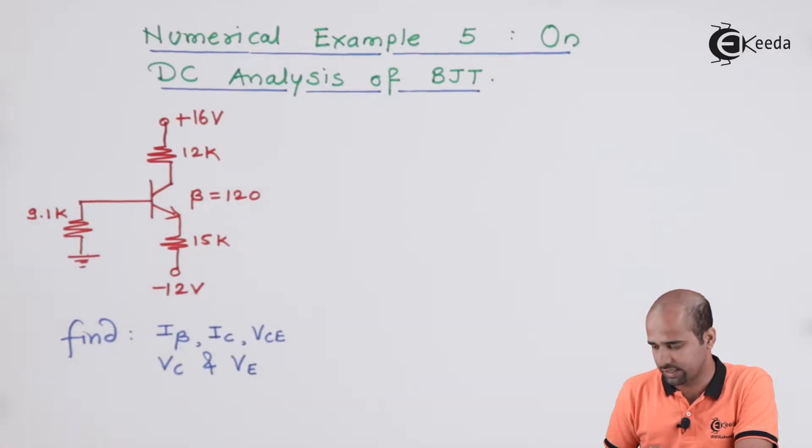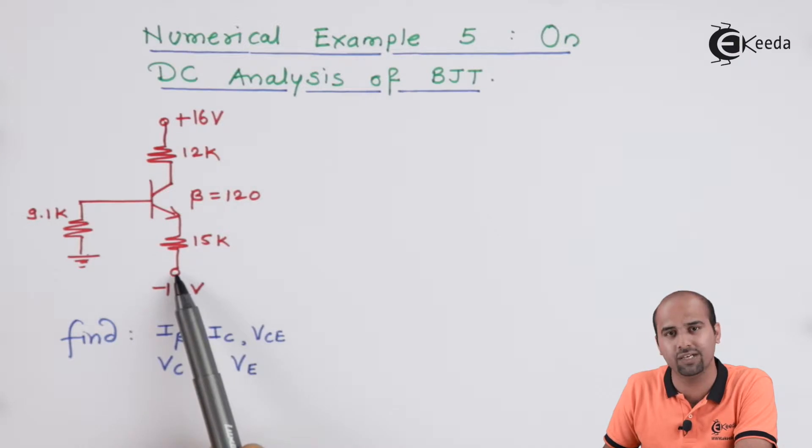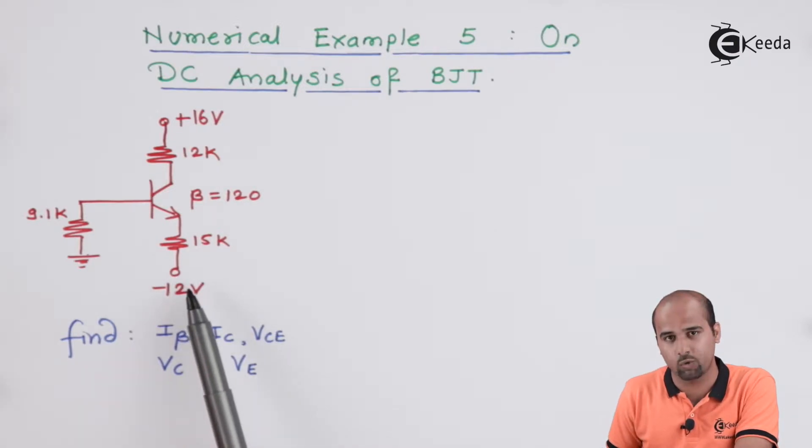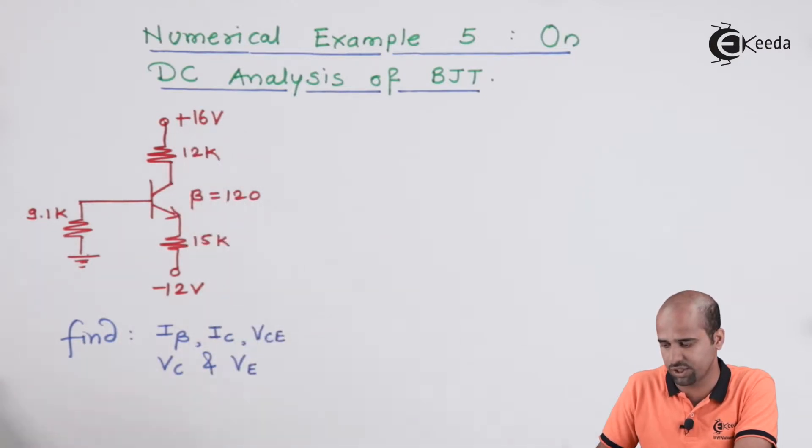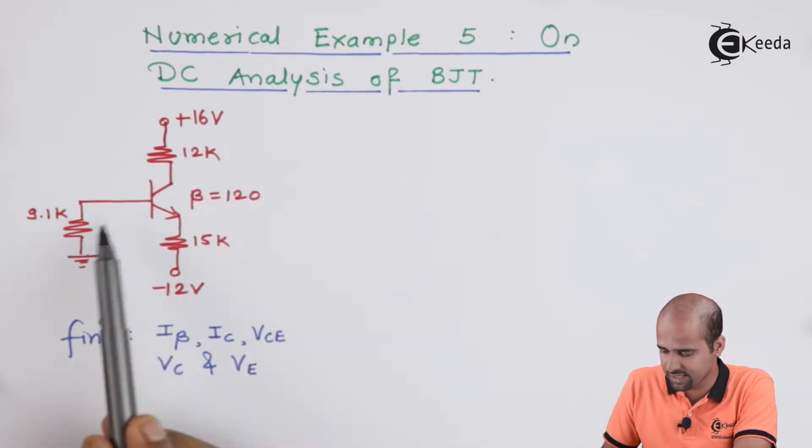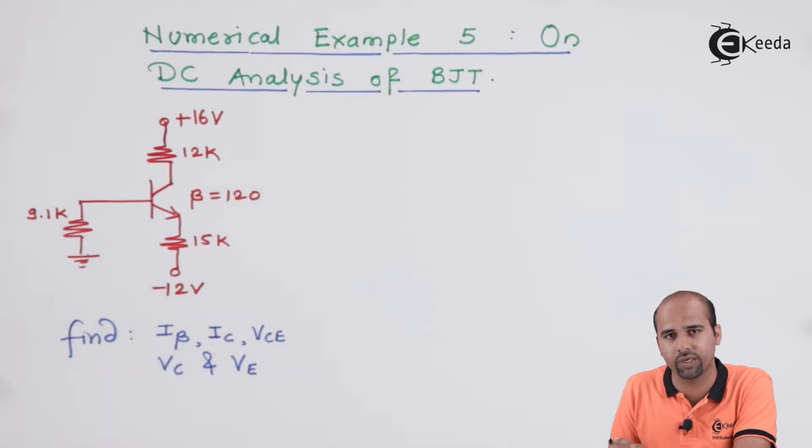See this particular circuit. Now in this particular circuit, the different approach is we are using this self-biased technique where your value of emitter supply voltage is minus 12 volts and collector supply voltage is plus 16 volts and base is connected to ground through 9.1 kilo ohm. So this is the example of self-biasing technique. Nothing will change in the steps of input KVL and output KVL.